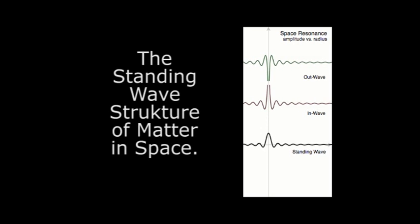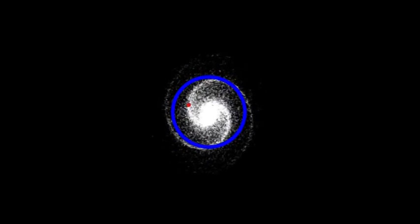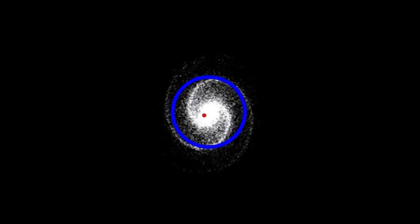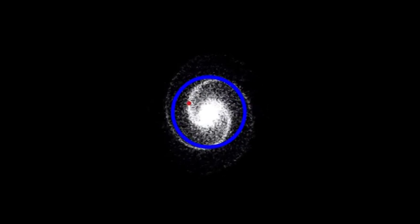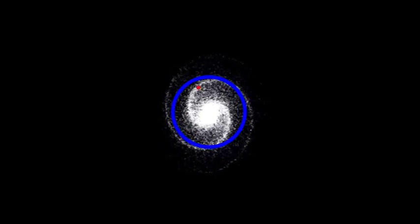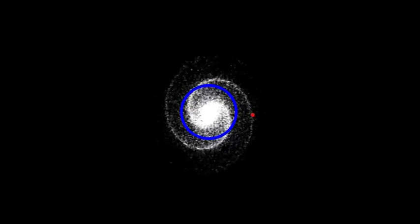The theory about the standing wave structure of matter in space explains that the photon is absorbed in the orbit of the electron, speeds down to zero, hits the core of the atom, reverses its flow and speeds up again, hitting the orbit of the electron once again and continues its travel by the speed of light.